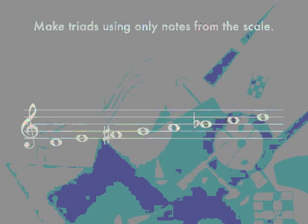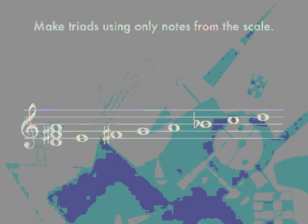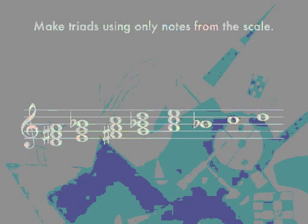The next step is to make the triads the same way we would for the major scale, but using only the notes from this scale. So the first chord is D, skipping to F sharp, then A. Then E, G natural, B flat. Then F sharp, A, C natural. Then G, B flat, D. Then A, C, E. Then B flat, D, F sharp. And lastly C, E, G.